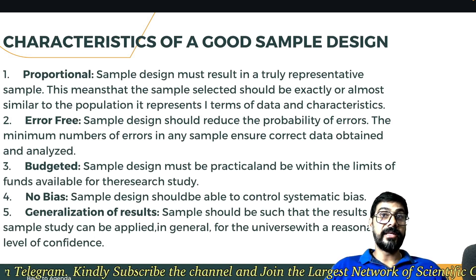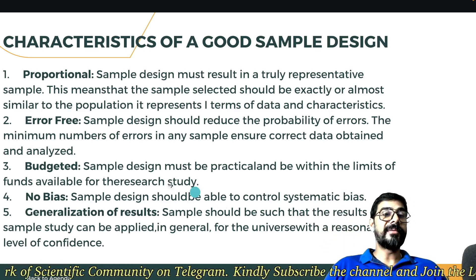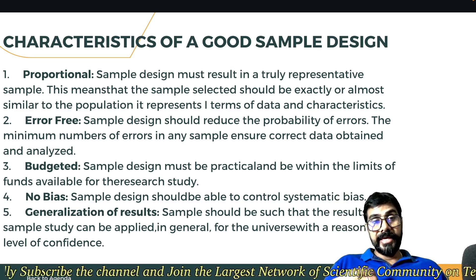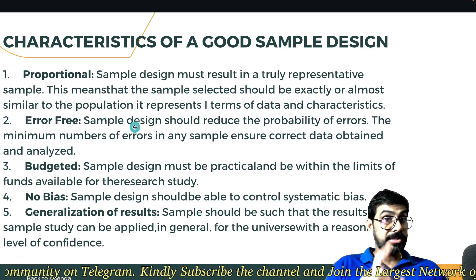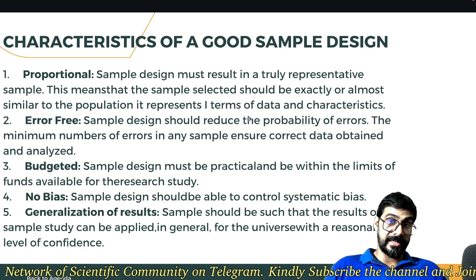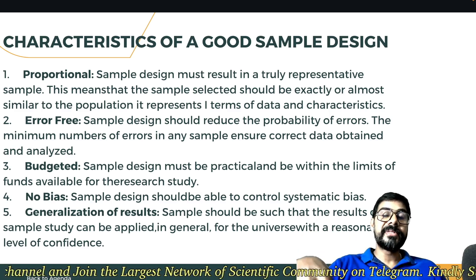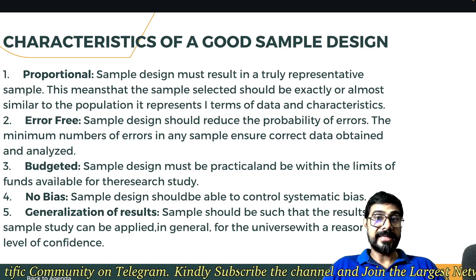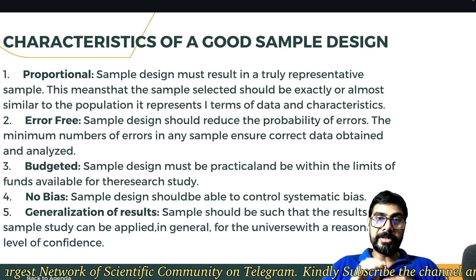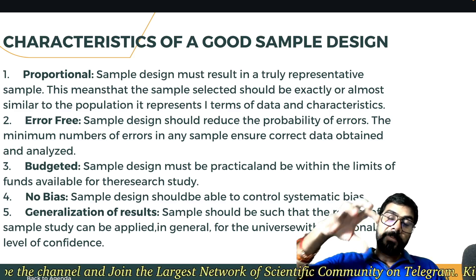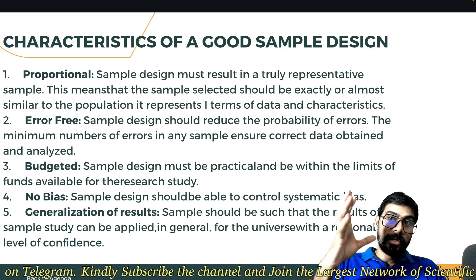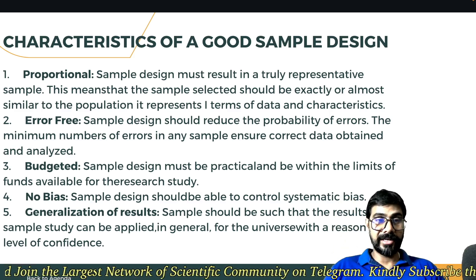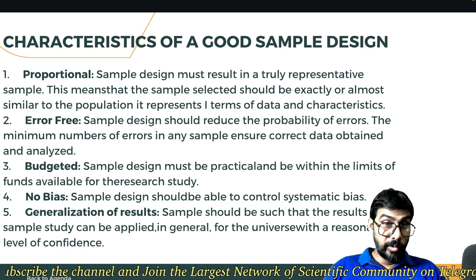Once you finalize your design, your points must be very clear. First, it must be proportional — meaning it should be a truly representative sample. The sample selected should be exactly or almost similar to the population it represents in terms of data and characteristics. For example, if I want to study all diabetic people in that village, I need to take everyone. If I only pick five samples and claim that 90% of that community is diabetic — that is very wrong. So it must be proportional; only then can you finalize and conclude your findings.